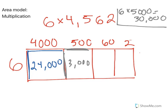The third piece has a width of 6 and a length of 60. 6 times 60 is 360. The last piece has a width of 6 and a length of 2. 6 times 2 is 12.